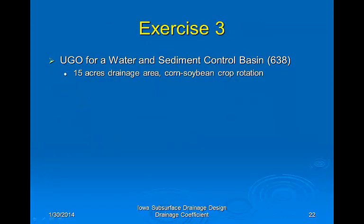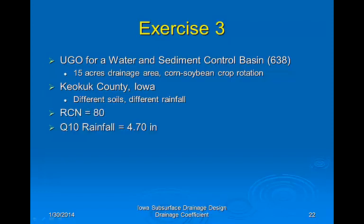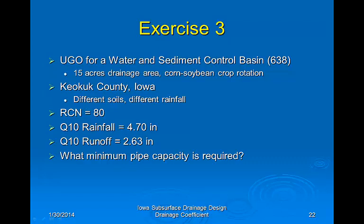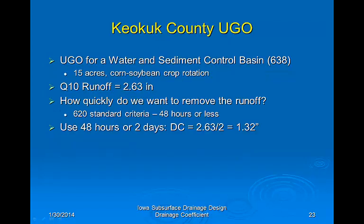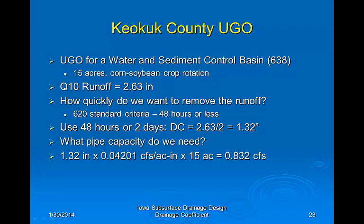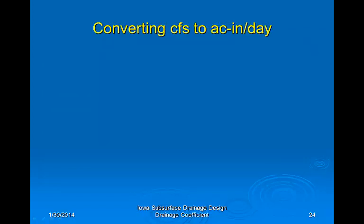Let's do one more example to show the difference in capacity at a different location. This underground outlet is for a water and sediment control basin in Keokuk County, southeast Iowa. At this site the runoff curve number is 80, rainfall is 4.7 inches, and runoff is 2.63 inches. Dividing runoff by 2 gives the drainage coefficient, and the minimum capacity at this site is 0.832 CFS — much larger than the Plymouth County site, reflecting the difference in rainfall and soils.